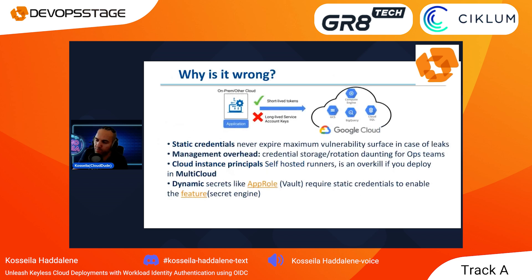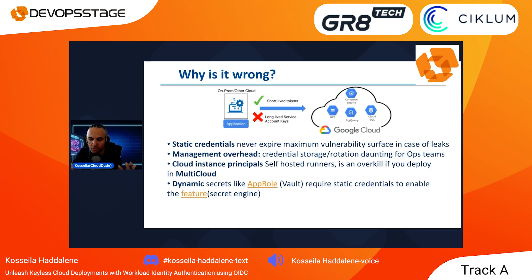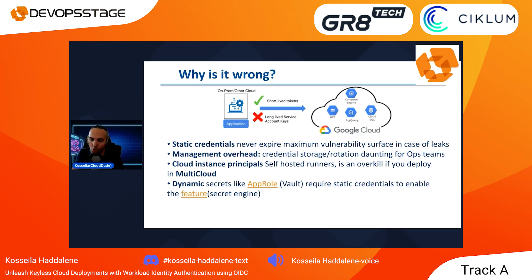And then you have assumed roles — I call them semi-dynamic — one example being the app role from HashiCorp Vault. But why are these authentications risky in GitHub? Simply because short-lived is good and static or long-lived is bad. Static credentials never expire; they stay there forever, which increases the vulnerability surface in case of leaks. There's also a lot of management overhead: you need to manage the storage of these credentials, the rotation, and that's a lot of work for your ops team. Even dynamic secrets like app role for Vault require static credentials to enable the feature.